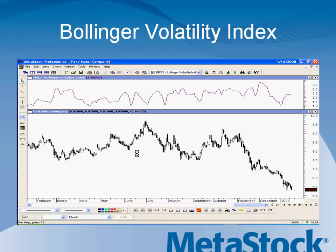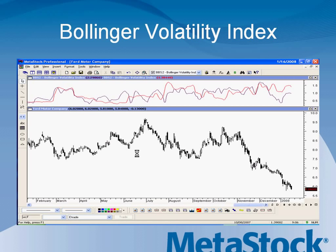We can also use what's called the Bollinger Volatility Index to see how volatile a stock is. You can look at this indicator to get a good feel for what's happening, but the real power is in combining it with the volatility of another stock. Here I've taken Ford Motor Company and the Dow Jones. The purple line is the Bollinger Volatility Index on Ford, and the red line is the Bollinger Volatility Index on the Dow Jones Index. You can compare the volatility of the two. The Bollinger Band System comes with a great manual that will walk you through how to use these to their full power.